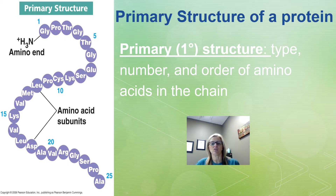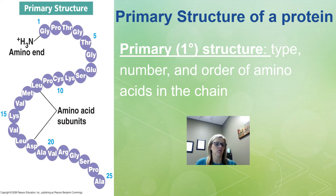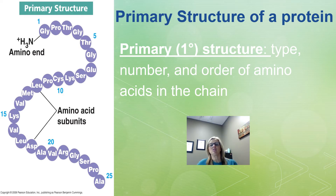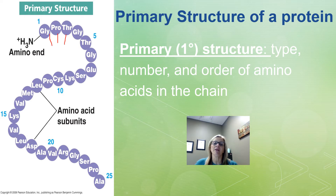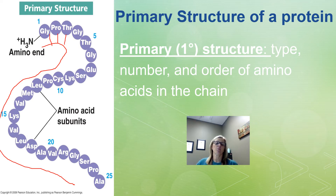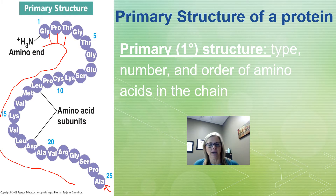It's important to understand how proteins are put together so we understand what happens when we heat them up or when they come into contact with acid, because these are ways that we can get rid of bacteria or microbes. The primary structure of a protein is the order of amino acids — each of these little beads is an amino acid. The number and order they go in determines the rest of the structure of a protein. Your DNA codes for every protein.